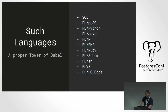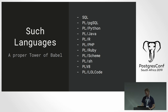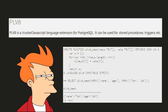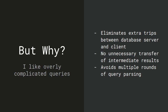Postgres allows a lot of languages that we can use to write these functions in. There's quite a list: SQL, Python, Java, R, Scheme, SH, and then PLV8 and PLLolCode. I would suggest you go and look at lolcode if you'd like to have a little bit of a laugh. PLV8 is just a JavaScript engine if you want to add JavaScript to your database. And that is a little example of what JavaScript would look like.